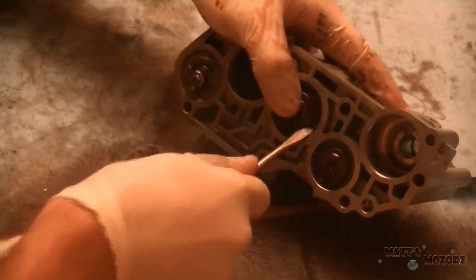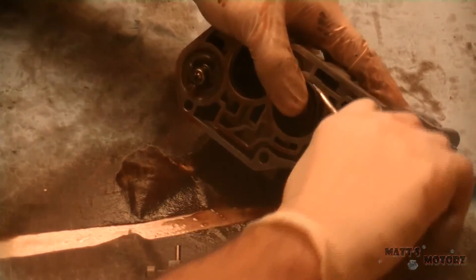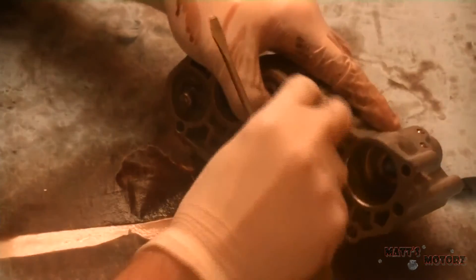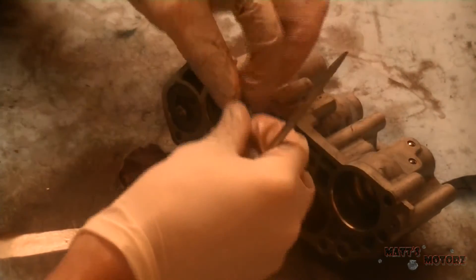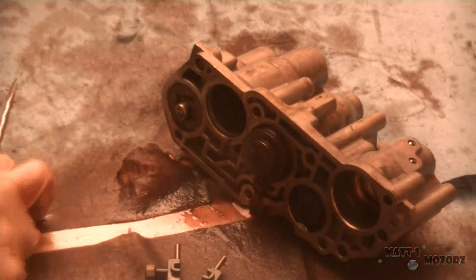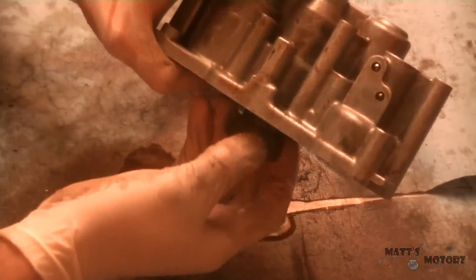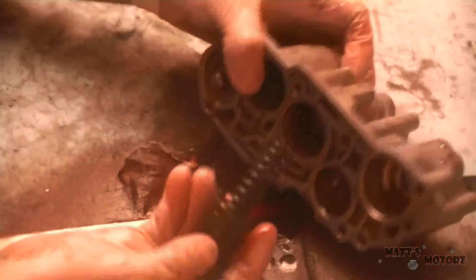Next we have the fourth accumulator piston. And this one has another snap ring, but you have to pry it off. Either a pick or a screwdriver. There we go. Comes right out.